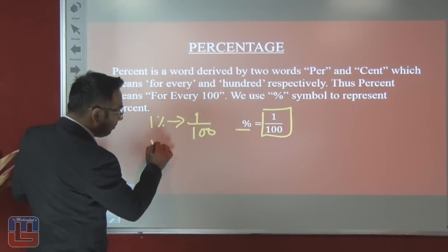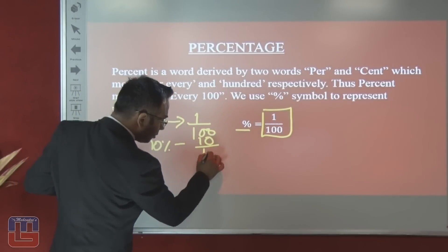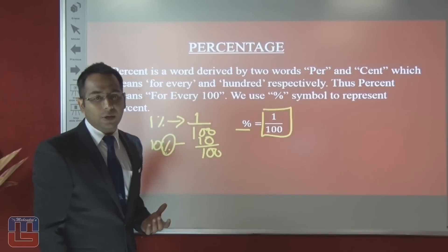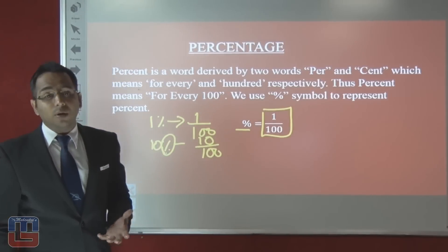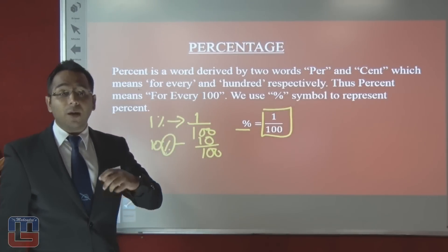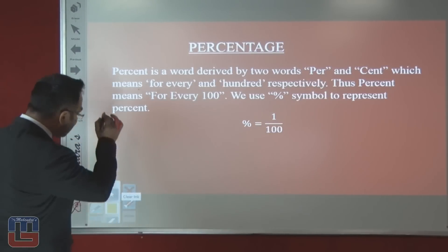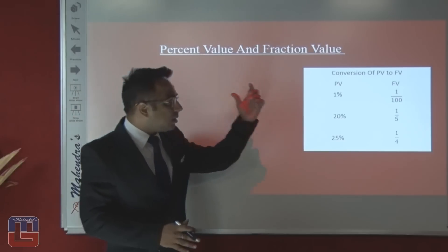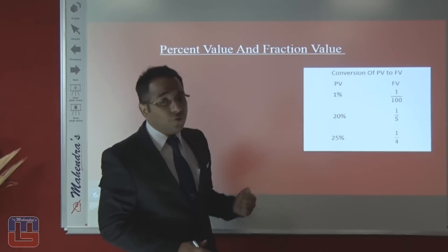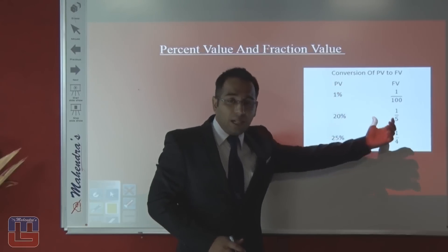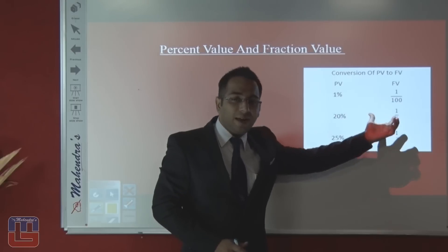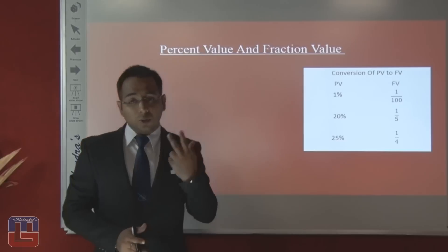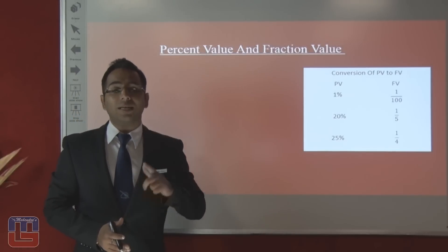Wherever we have a percent sign, we can remove that sign and divide the value by 100 to get its fraction value. The percent value is any value with a percent sign, and the fraction value is what we get after removing the percent sign and dividing by 100. These two — percent value and fraction value — are the two forms we work with.